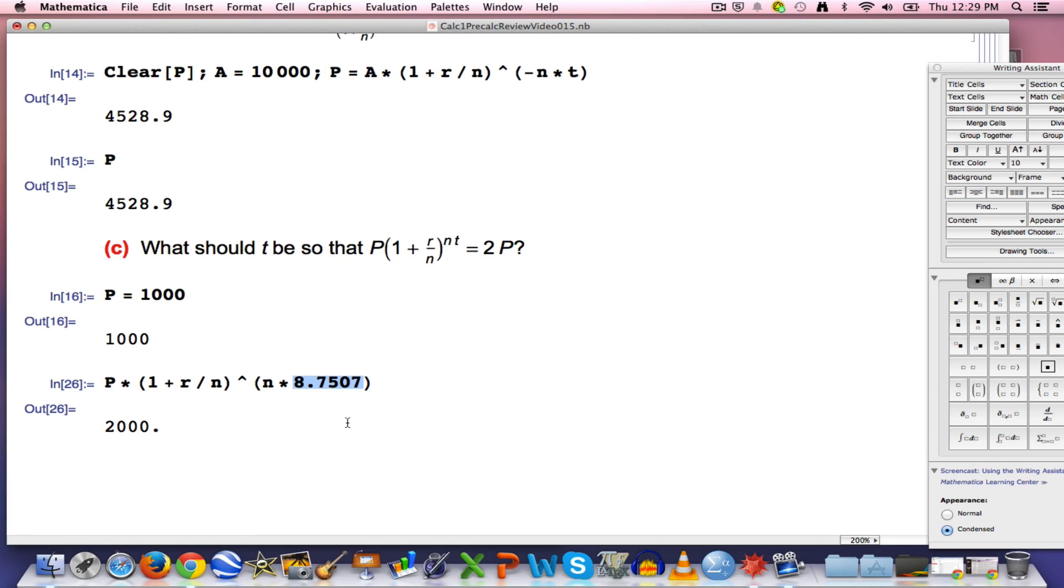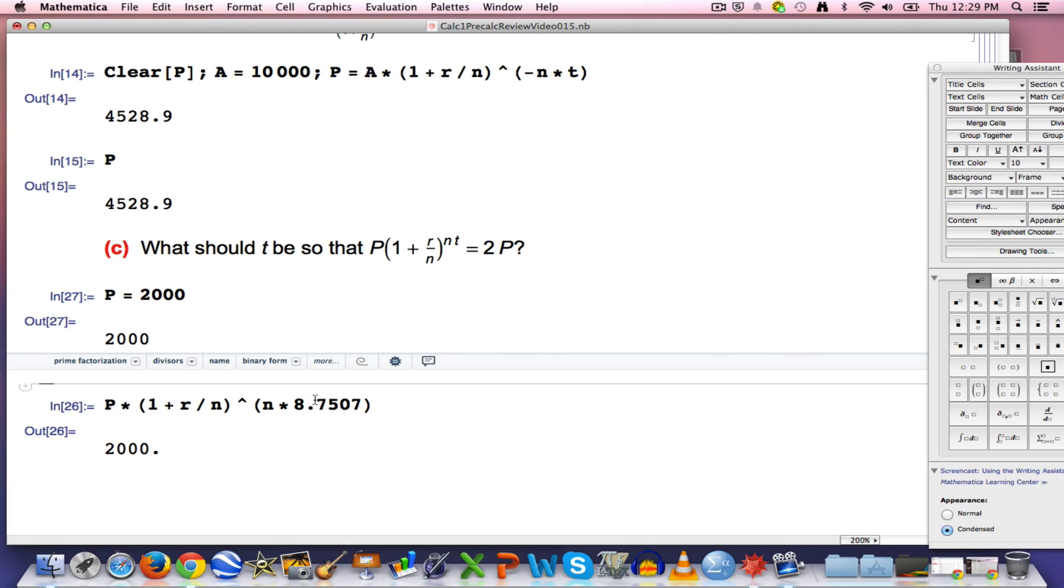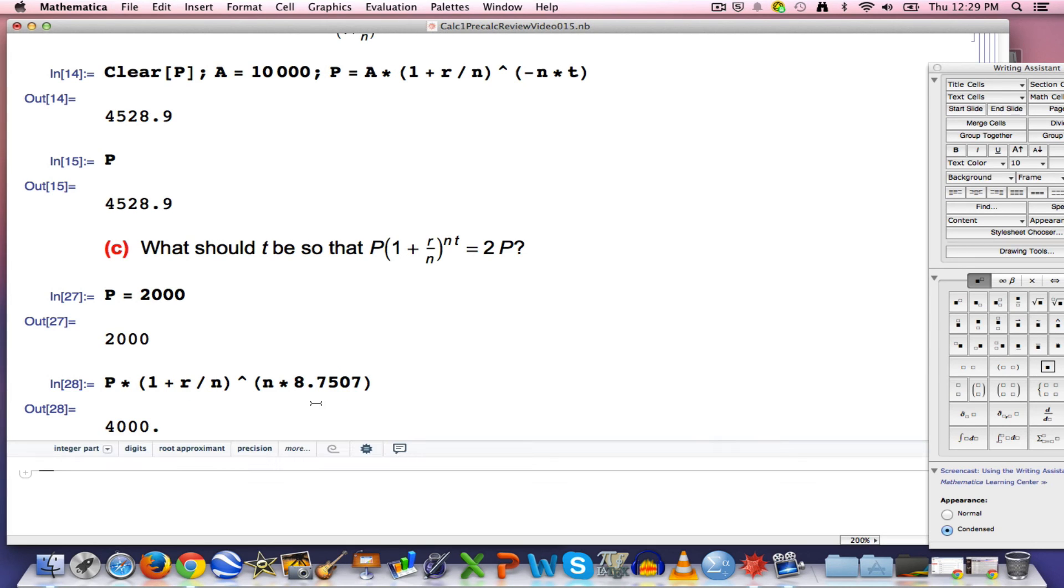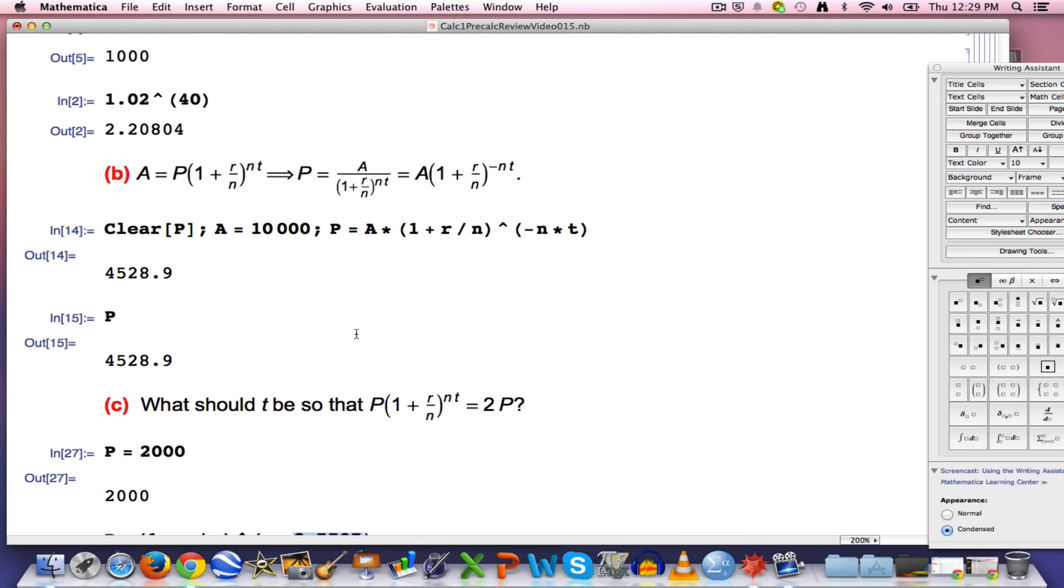That would be the answer for part C approximately. Round it. Go ahead and round it. Approximately 8.75 years to double. It doesn't matter what P is. In fact, I'll show you it doesn't matter what P is. If I pick P equal to 2,000, 2,000 will approximately double over that same amount of time. 8 and 3 quarters years. 8 years and 9 months would be the approximate doubling time for this account. Think about all this. Think about especially this idea of an inverse function. And we'll get back to that in the next video.